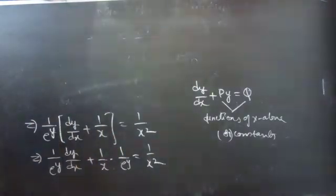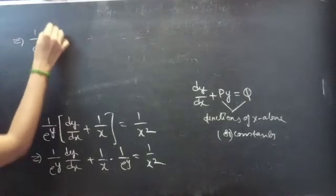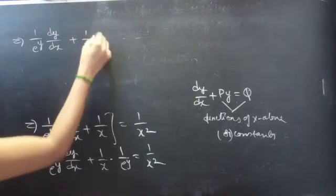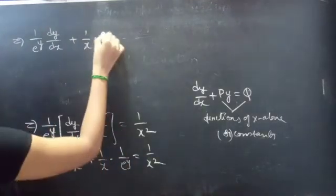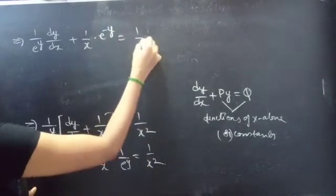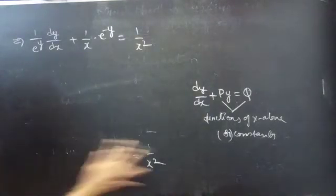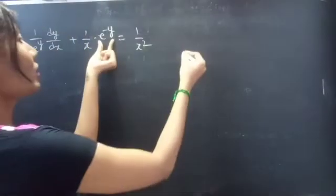We have (1/e^y)(dy/dx) plus (1/x) times e^(−y) equals 1/x². Now we will make the simple substitution: let e^(−y) equals u.